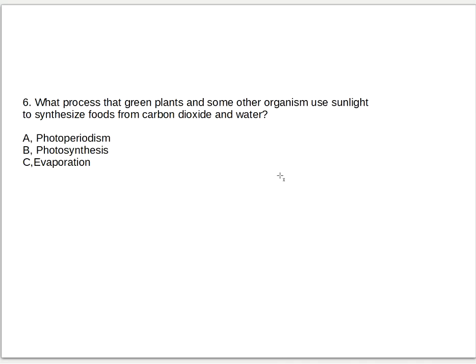Number six, this is the last question because I don't have a lot of time to make some more. I'll make some more next time. So the number six is the last question, it's all about science. What process that green plants and some other organism use sunlight to synthesize foods from carbon dioxide and water? Is it A, photoperiodism, B, photosynthesis, or C, evaporation? I'll give you five seconds to answer. And the answer is letter B.